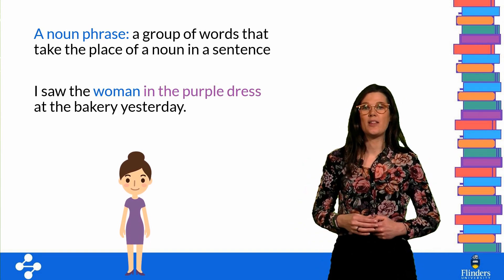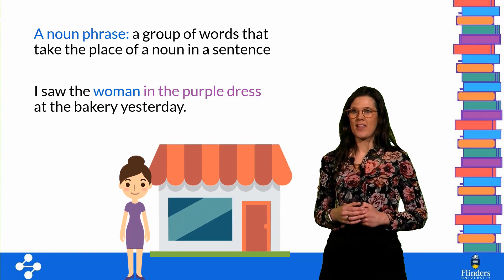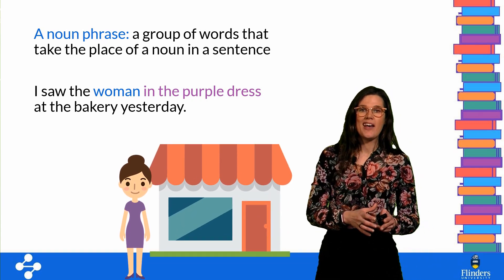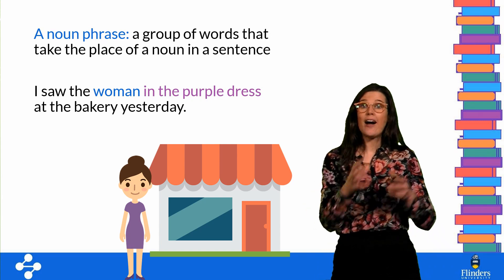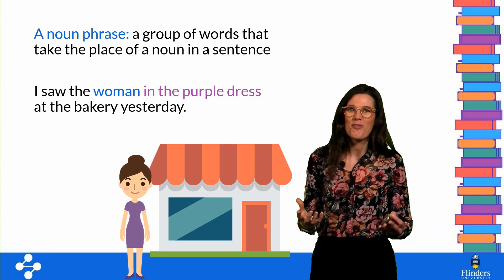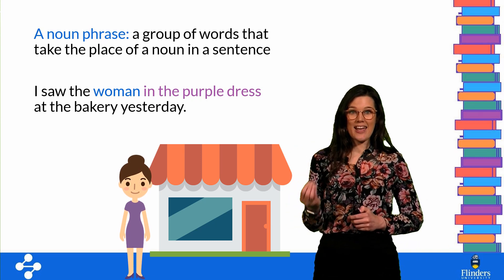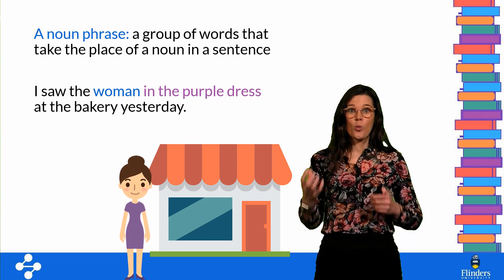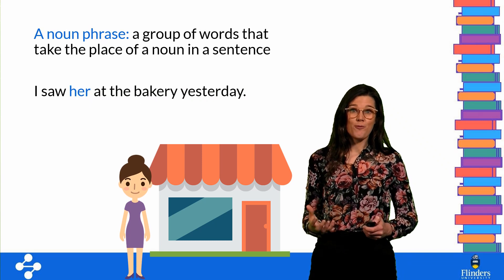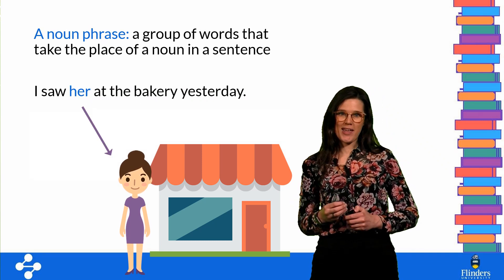This whole phrase then becomes a part of our sentence: 'I saw the woman in the purple dress at the bakery yesterday.' One way we can figure out whether we have a whole noun phrase is that we should be able to replace that noun phrase with a single pronoun. For example, 'I saw her at the bakery yesterday.'